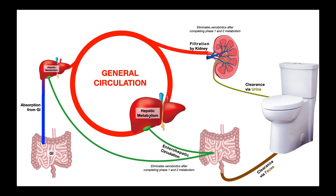Drugs that have been metabolized by the liver via phase one and phase two metabolism have one of two fates. In the first fate, once metabolized, they directly enter the enterohepatic circulation — moving to the biliary system, through the gallbladder, and into the GI, where they are simply eliminated through feces. Some drugs may enter enterohepatic circulation right after the first pass effect before ever reaching the general circulation; others after the second pass.